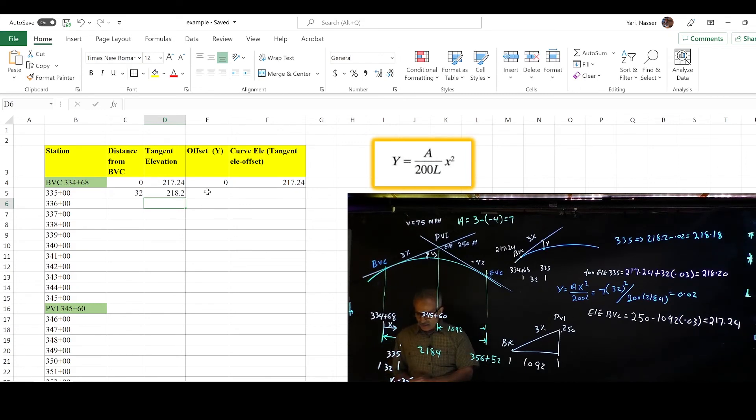So we're going to calculate the offset y, and there's the equation right there. So I'm going to type in equal, parenthesis, then A was 7%, multiply that by x squared, so type on C5 again, click C5, and put in shift number 6, which will make it by power 2, and close the parenthesis, divided by parenthesis open, 200 times 2184, close the parenthesis.